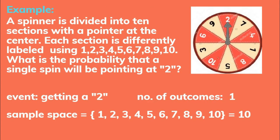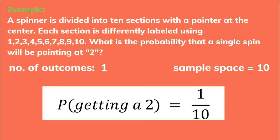A spinner is divided into 10 sections with a pointer at the center. Each section is differently labeled using 1 through 10. What is the probability that a single spin will be pointing at 2? The event is getting a 2 — that is 1 outcome — and the sample space is equal to 10. Therefore, the probability of getting a 2 is equal to 1 over 10.